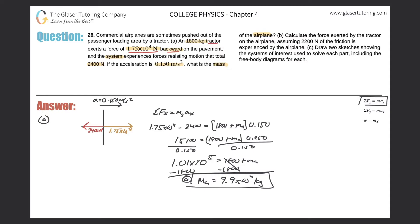Now let's take a look at letter B. It says: calculate the force exerted by the tractor on the airplane, assuming 2,200 newtons of the friction is experienced by the airplane. Let's draw a little sketch. Now there are a couple of ways you can do this problem. Let me represent the airplane and tractor each as a point. What forces are acting on the airplane? Well, 2,200 newtons of the total 2,400 newtons of frictional force is acting on the airplane — that's going to oppose the motion, pointing to the left.